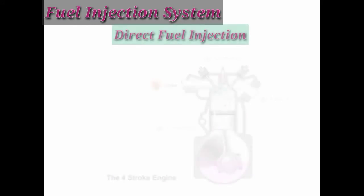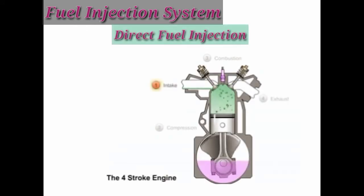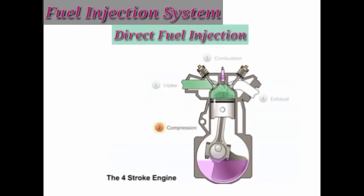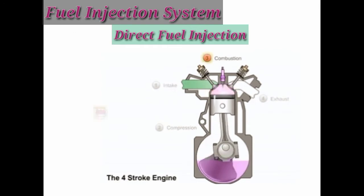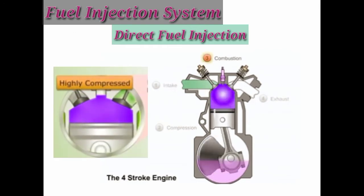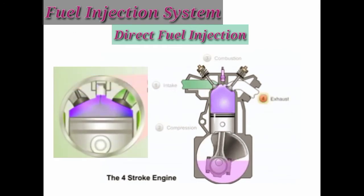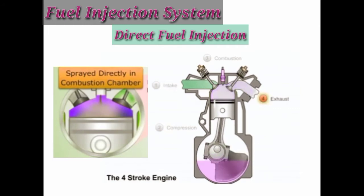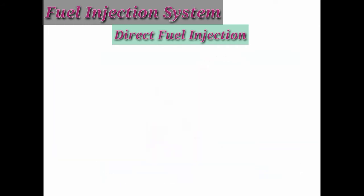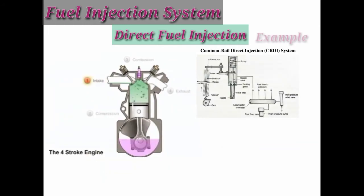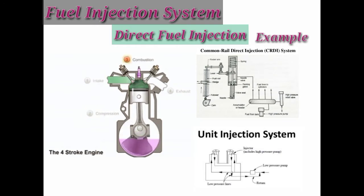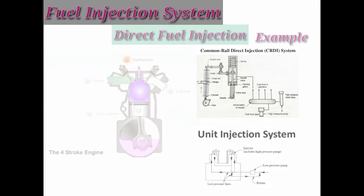In the direct fuel injection system, air enters the combustion chamber and gets compressed. Fuel particles spread directly into the combustion chamber and combustion gets started. Common rail direct injection system and unit injector are the two examples of direct injection system.